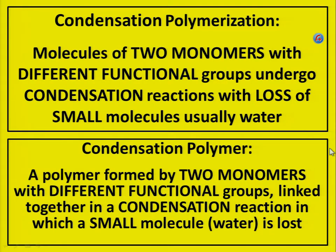Condensation polymerization: molecules of two monomers with different functional groups undergo condensation reactions with loss of small molecules, usually water. Condensation polymer: a polymer formed by two monomers with different functional groups linked together in a condensation reaction in which a small molecule is lost.